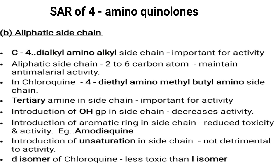Regarding the aliphatic side chain in 4-aminoquinolines: the fourth position has a dialkylamino-alkyl side chain, which is important for activity. This aliphatic side chain should have two to six carbon atoms to maintain antimalarial activity. In chloroquine, the tertiary amine in the side chain is important for activity. Introducing a hydroxy group in the side chain reduces activity, as seen in hydroxychloroquine. Introducing an aromatic ring reduces toxicity, as in amodiaquine. Introducing unsaturation is not detrimental to activity. The D-isomer of chloroquine is less toxic than the L-isomer.